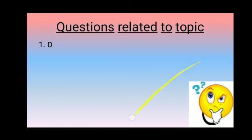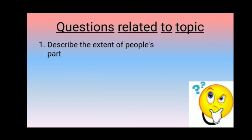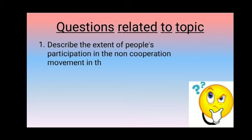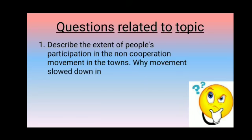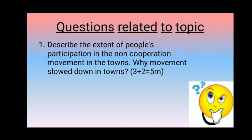Question related to the topic — 'Describe the extent of people's participation in the non-cooperation movement in the towns. Why did the movement slow down in the towns?' First, describe the middle-class participation: how people left government institutions, boycotted foreign goods, and burned huge bonfires. Write three points on that. Then, for why the movement slowed down, write about why people replaced khadi with British mill cloth and returned to British schools, as there were no adequate Indian alternatives.